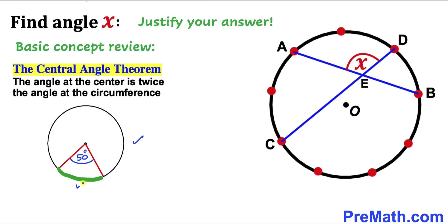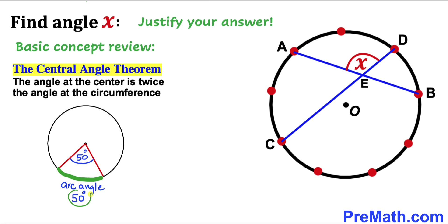Here's our example. Let's assume that this green arc makes an angle of 50 degrees at the center of this circle. Just keep in mind that this arc angle and this angle at the center have the same value.